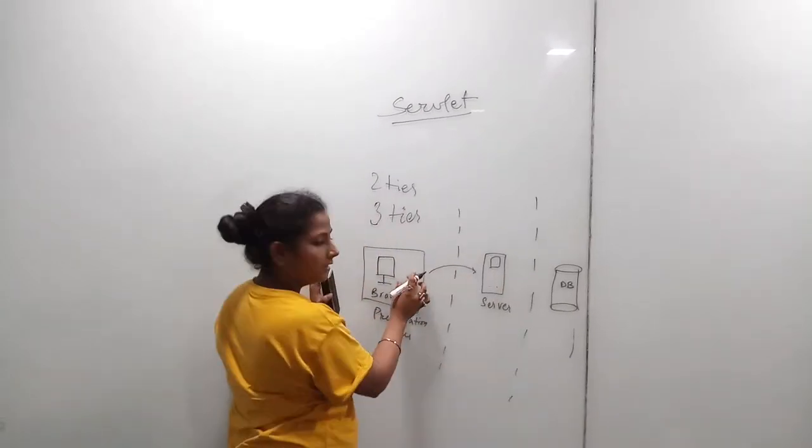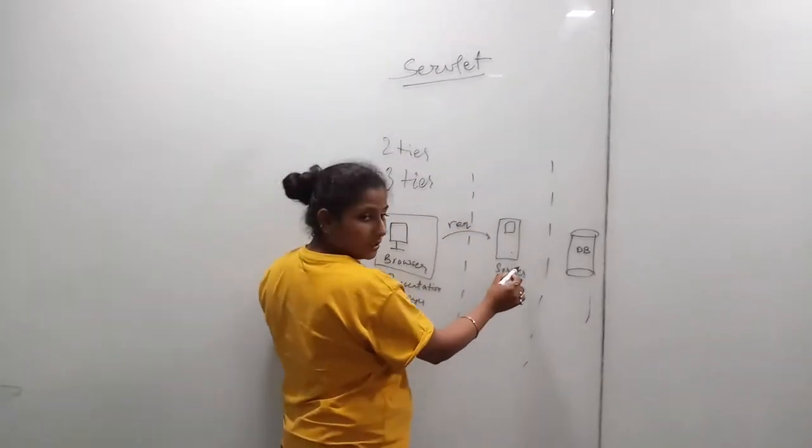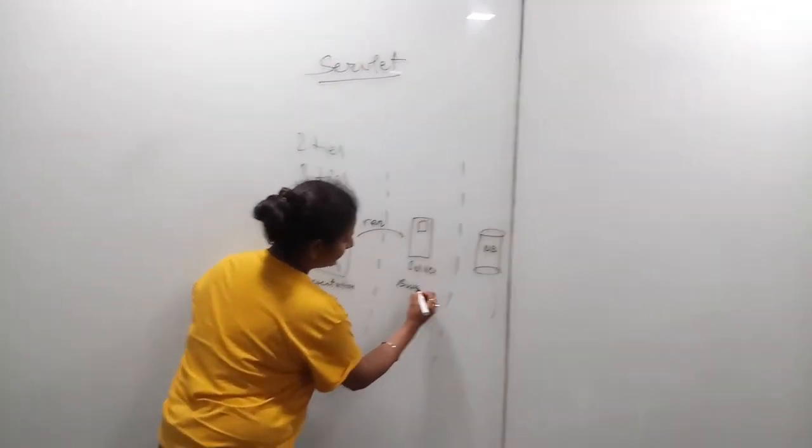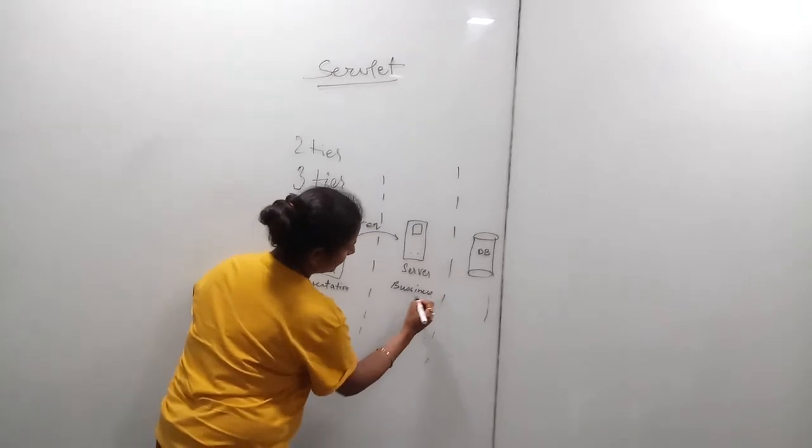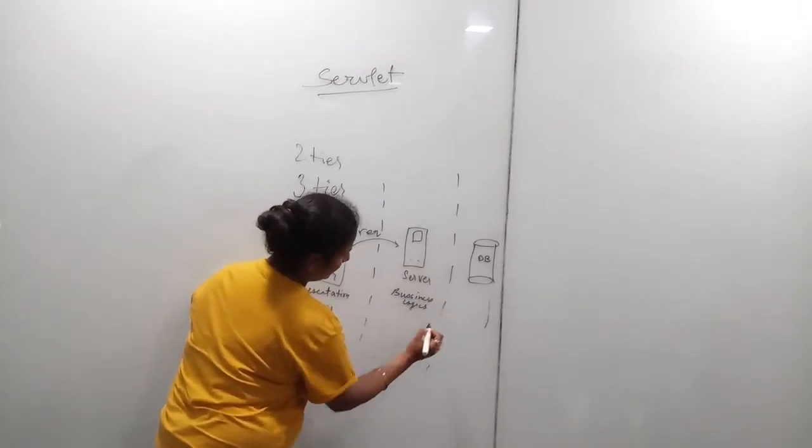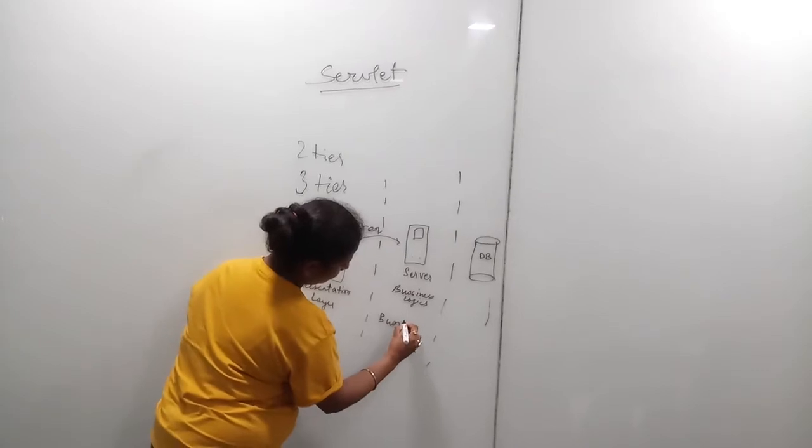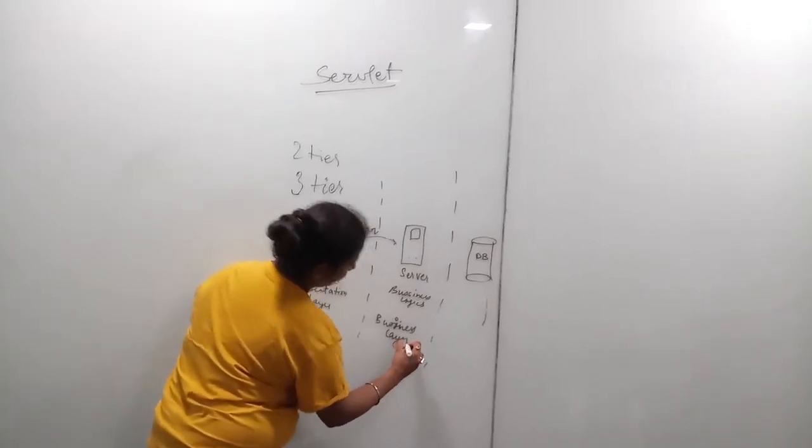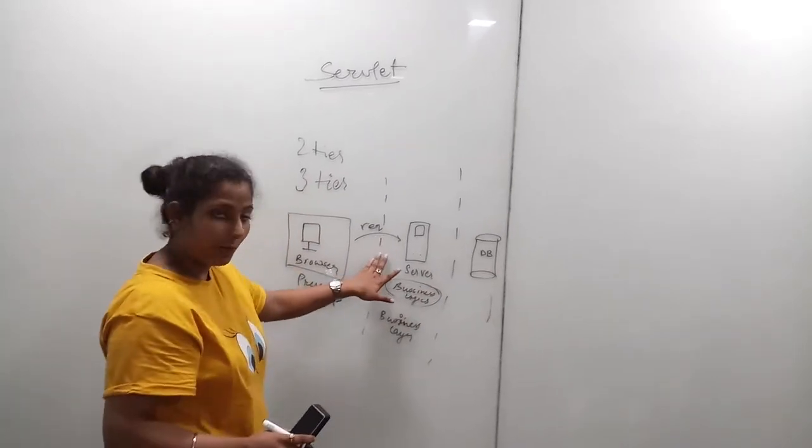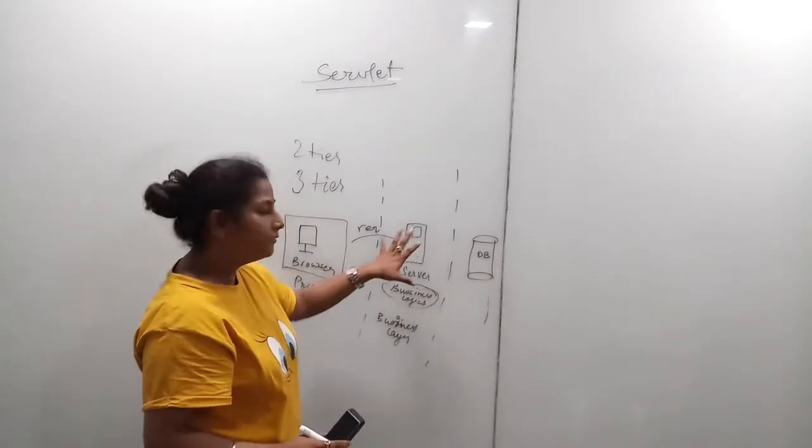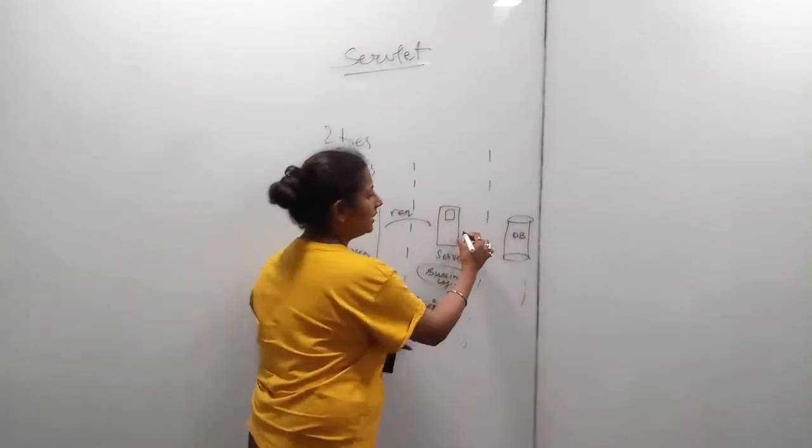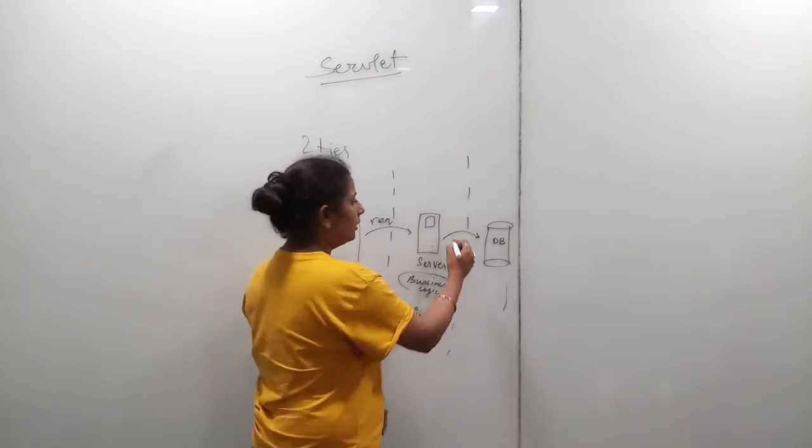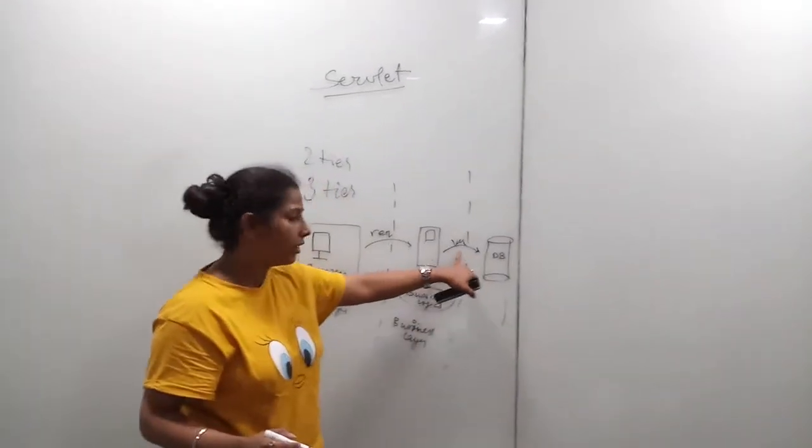From here the client sends a request to the server. Then the server does the business logic, performs the business logic over the request. Then it verifies the user, the client or the request from the database, that it is present inside the database or not. So it verifies it through a language called SQL.